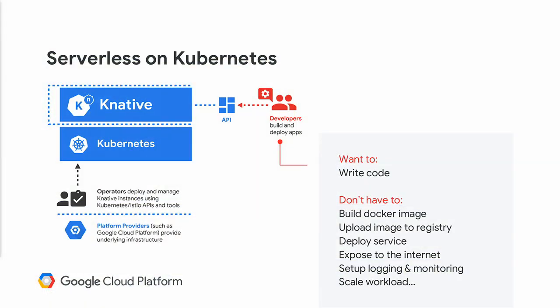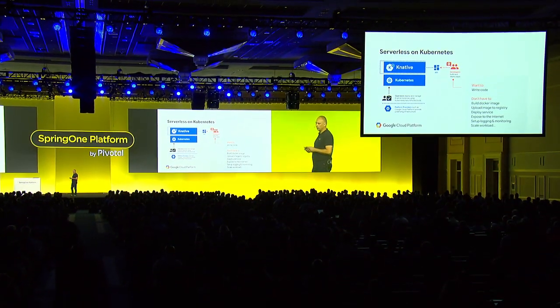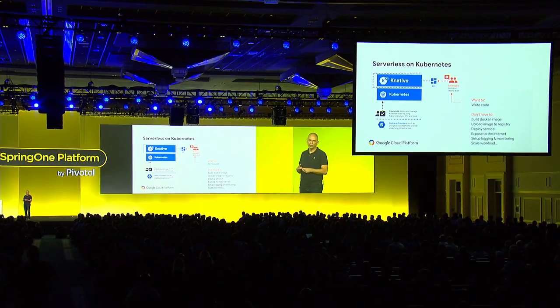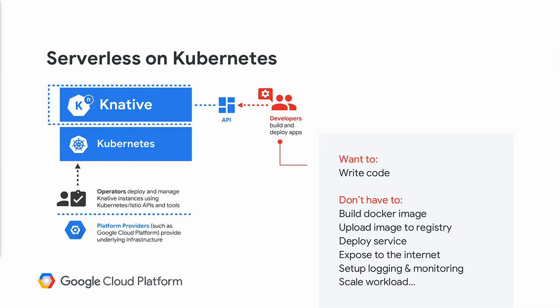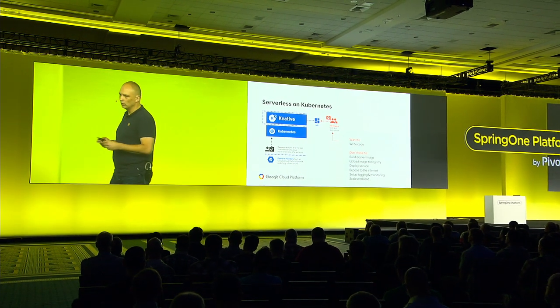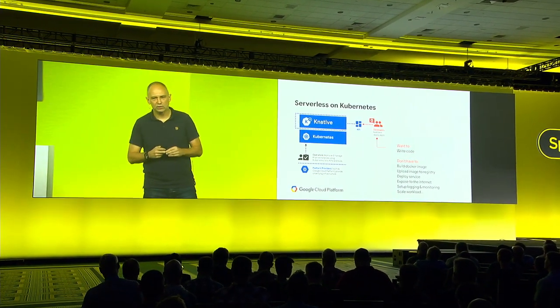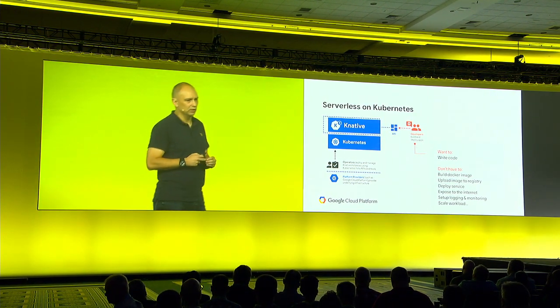What does Knative do for the developer? Developers just want to write code. Knative introduces a layer on top of Kubernetes deployed through a set of custom resource definitions that extend the capability of Kubernetes. It addresses the gap between where you'd want to be for serverless and where Kubernetes is today. That gives you additional capability into kubectl, and for serverless developers we're also introducing the option of a custom CLI. Whichever way you connect, you really don't have to worry about building Docker images, uploading to a registry, deploying those services, managing exposure to the internet, or supplying logging or scaling.